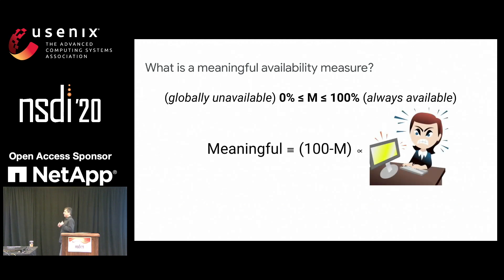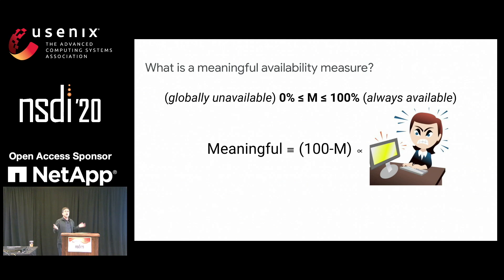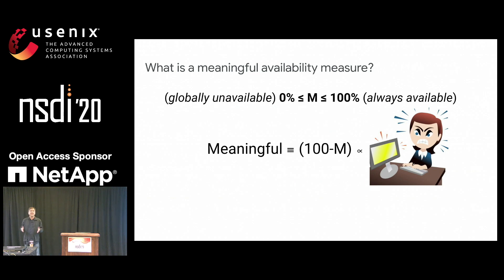What does meaningful mean? For this measure to be useful for us, it has to reflect what our users perceive. If the measure says availability is high, we want our users to be happy with the availability. And if the measure says availability is low, we expect a proportional dissatisfaction from our users. That's what we mean by it being meaningful.